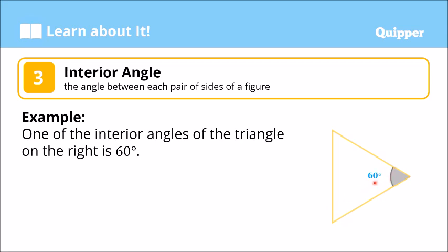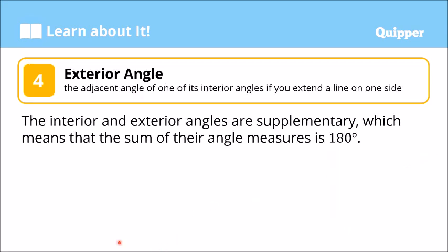The measure of this angle is 60 degrees — actually this one is also 60, and this one is also 60. So one of the interior angles of this triangle is 60 degrees. Now, what is called an exterior angle? An exterior angle is the adjacent angle of one of its interior angles, formed when you extend a line on one side.